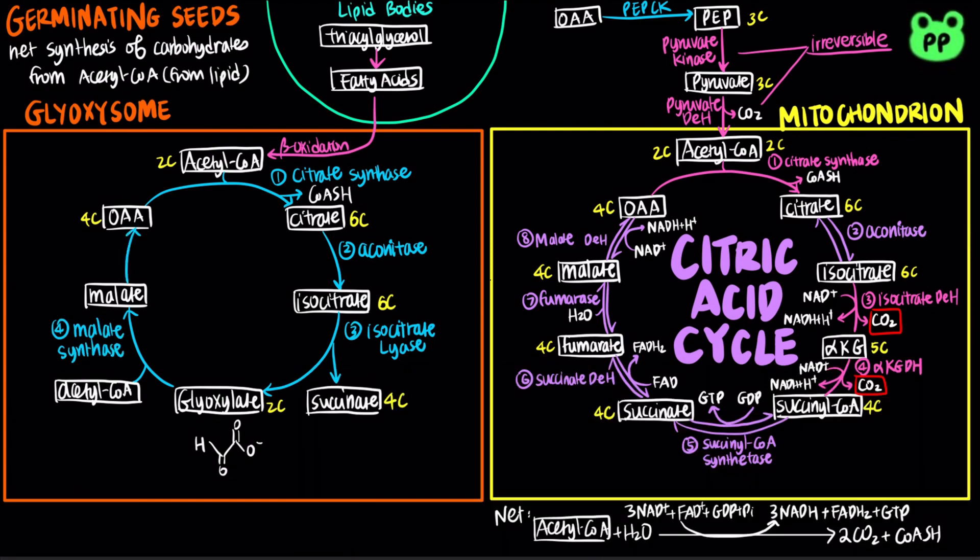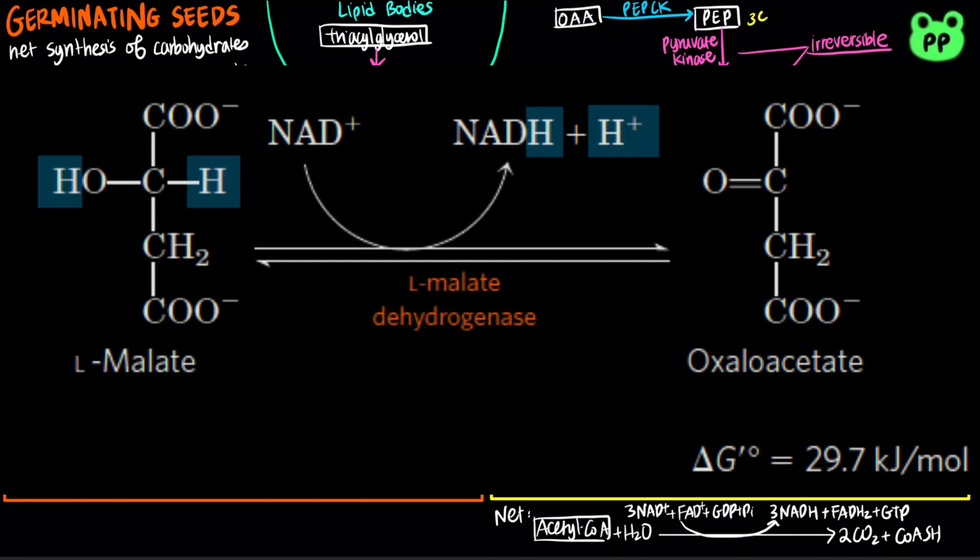The last step in glyoxylate cycle shares the same reaction with the last step of citric acid cycle, in which the malate is oxidized to oxaloacetate, coupling to the reduction of NAD plus to NADH.